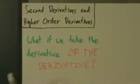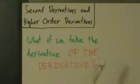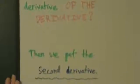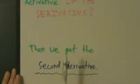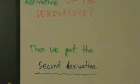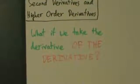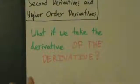This video introduces second derivatives and higher order derivatives. What happens if we take the derivative of the derivative? We get what's called the second derivative. You have a function, you take its derivative, and you get what's called the first derivative. Then if you take the derivative again, that's how you get the second derivative. Take the derivative a third time and you get the third derivative, and so on. You can keep doing that as long as the derivatives exist — that's a topic for a later video.